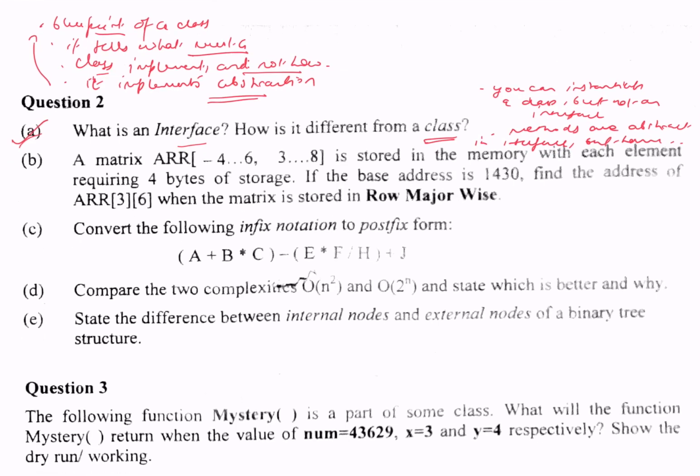Moving on to part B: a matrix. This is Pascal's way of representing an array. This array has rows with indices from -4 to 6, and columns with indices from 3 to 8. It's stored in memory with each element requiring 4 bytes of storage.